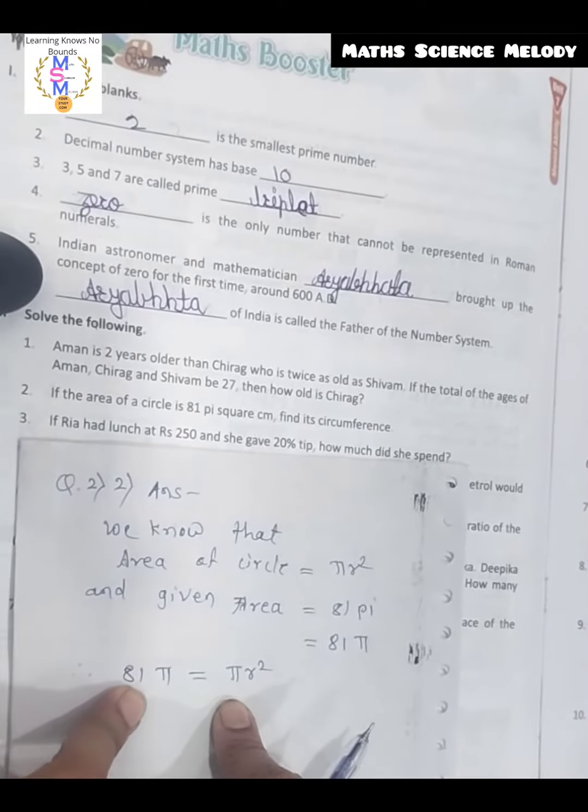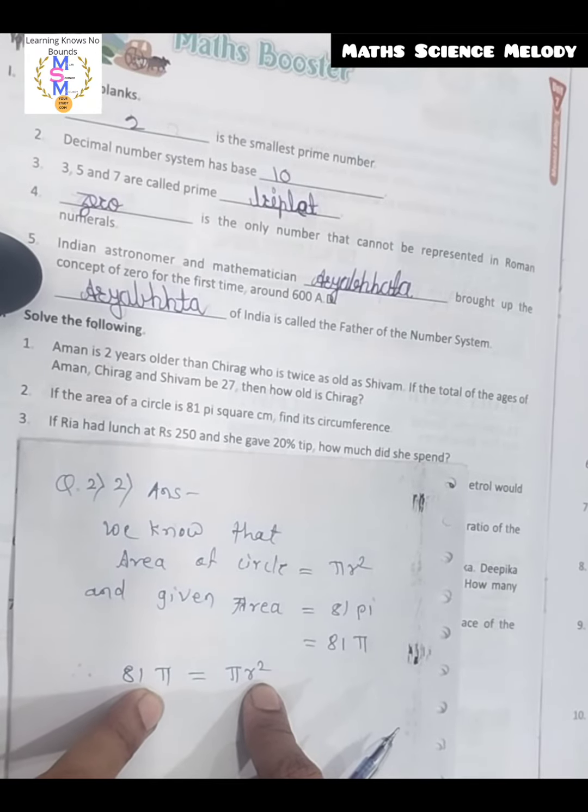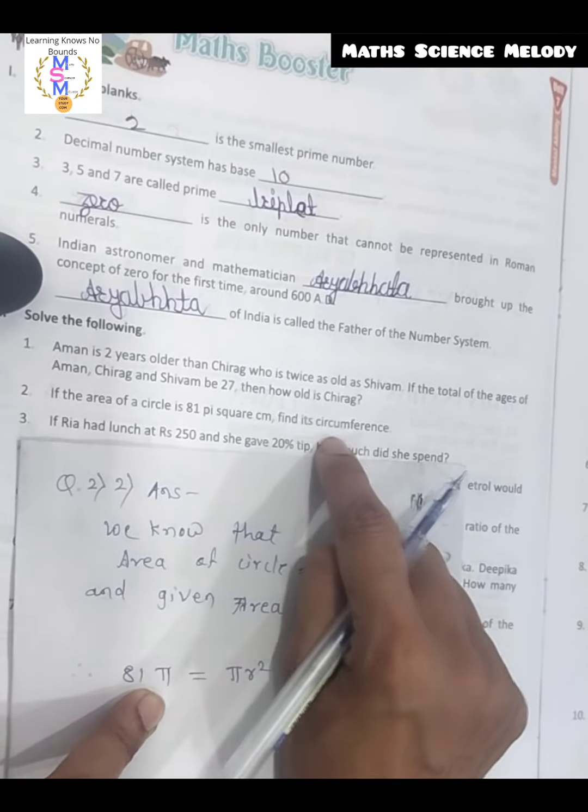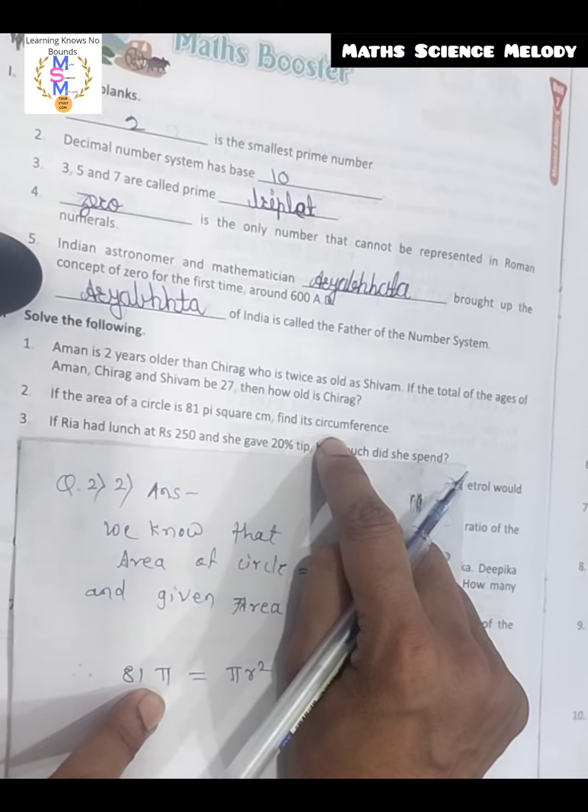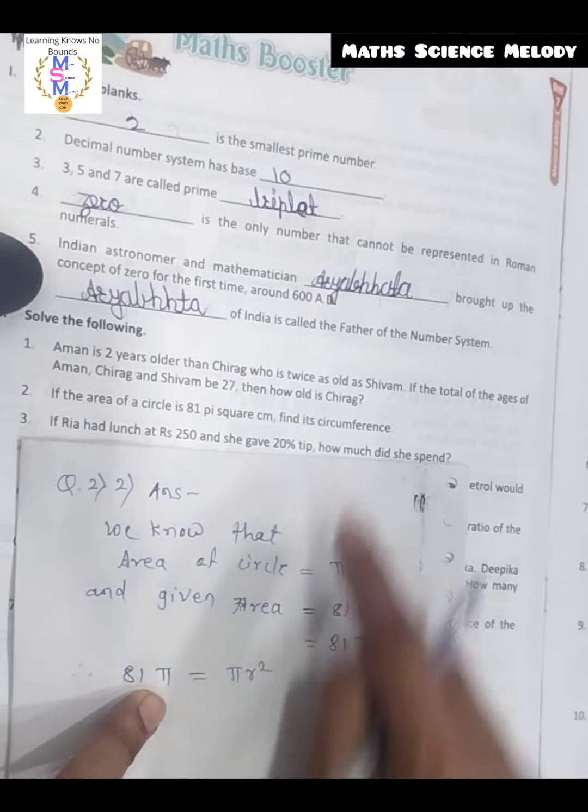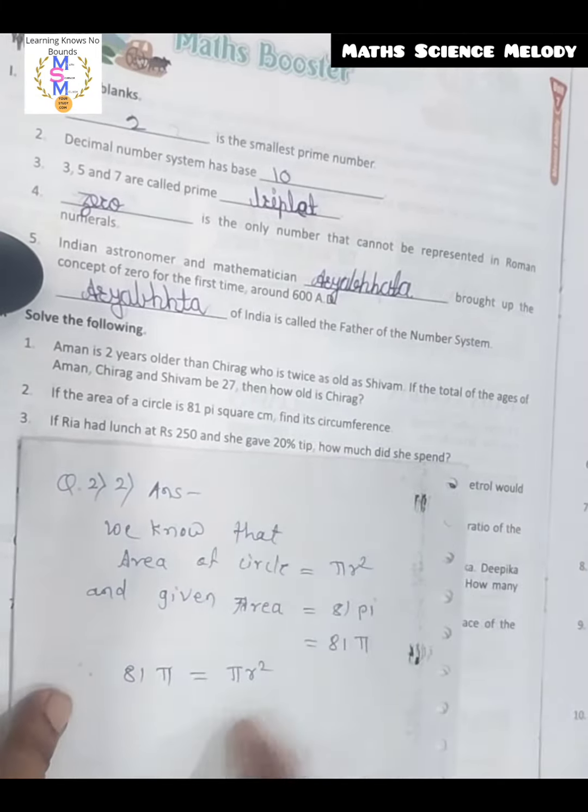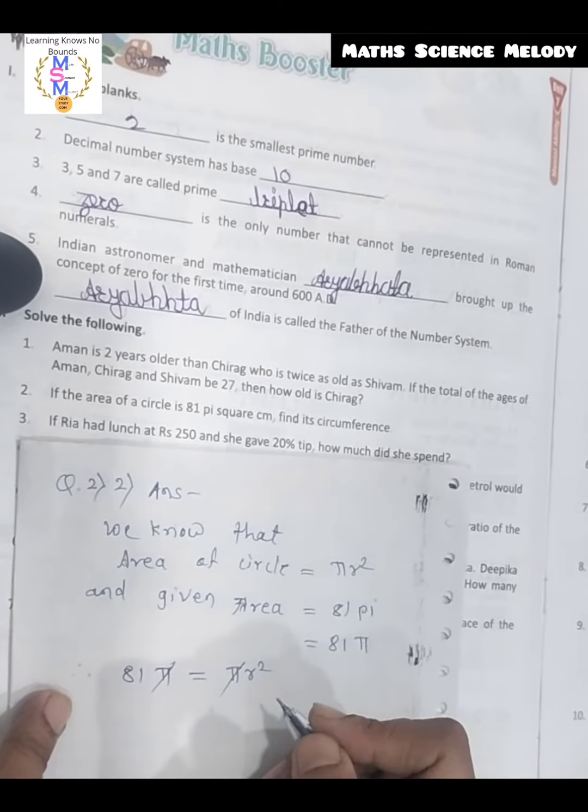So we can write this because we have the value of r, means radius. Then we have circumference. Circumference formula is 2πr. If we have the radius then we can find the circumference. π and π cancels.